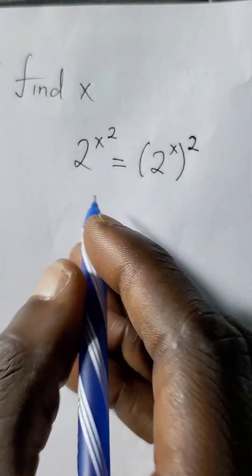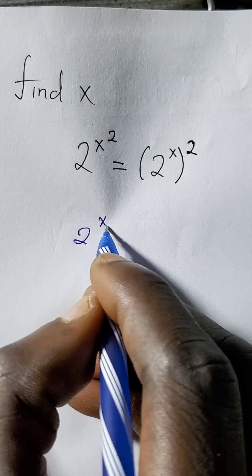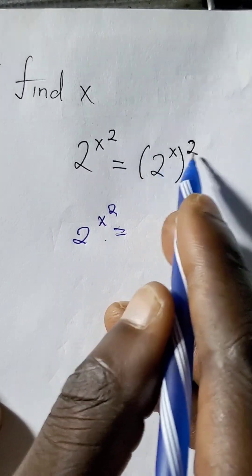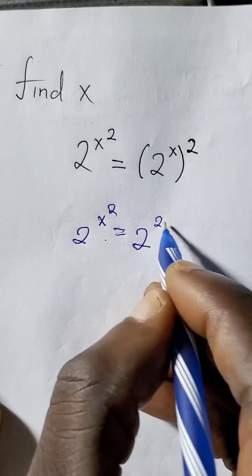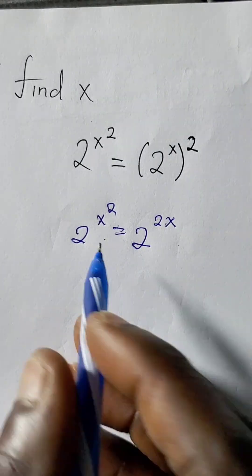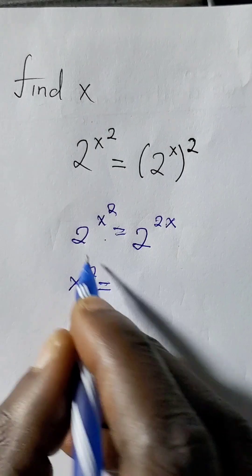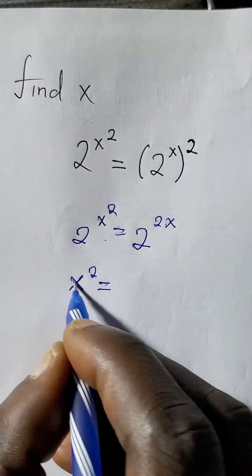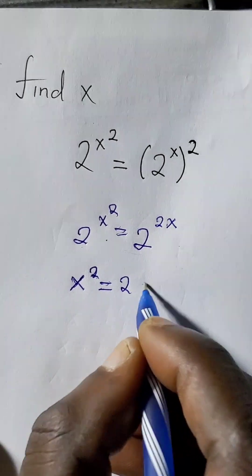For x here, we're going to write it as 2 to the power x squared equals 2 to the power 2x. This x and this one can multiply, giving us 2 to the power 2x. Now the bases are the same, so we can equate the powers: x squared equals 2x.